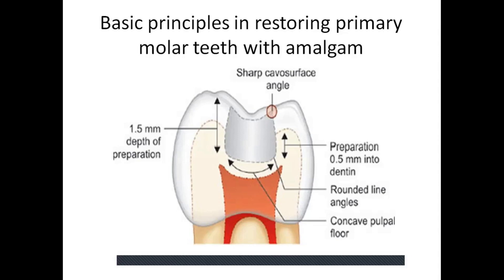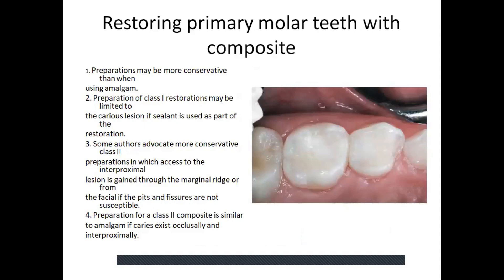Now the restoration of the primary molar teeth with composite. The preparation may be more conservative as compared to amalgam. In class 1, it may be limited to the carious lesion if it is used as part of the restoration. Some practitioners advocate a more conservative class 2, in which access to the interproximal lesion is gained through the marginal ridge from the occlusal if the pits and fissures are not susceptible. The class 2 preparation is similar to amalgam if caries exists occlusally as well as interproximally. Composite is very technique-sensitive and is successful only if a dry field is maintained.